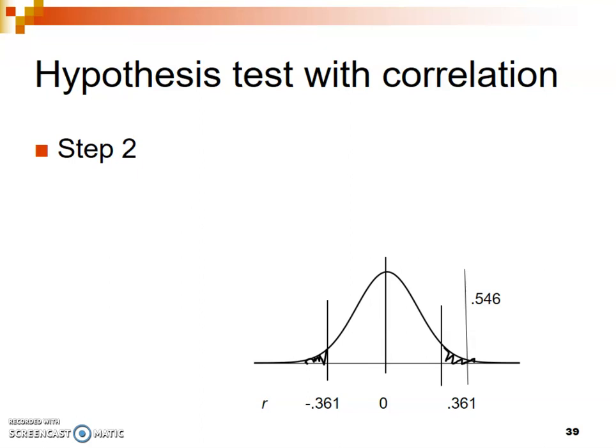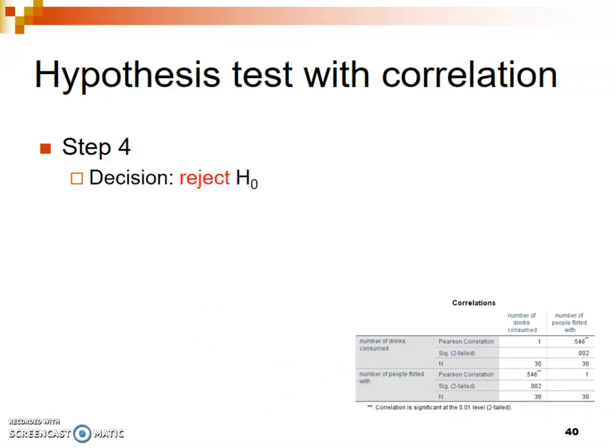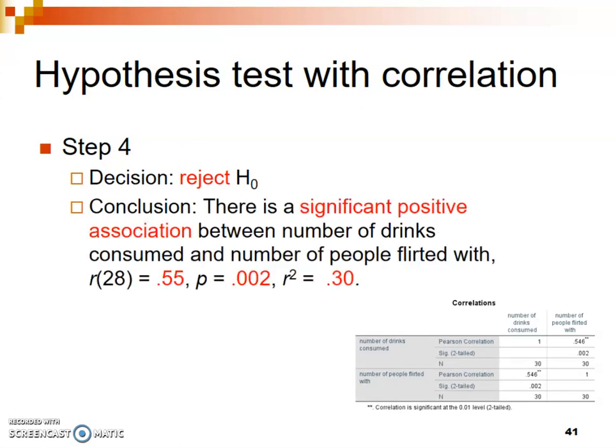Since our obtained value for R does fall in the critical region, our decision is to reject the null hypothesis. The null hypothesis was wrong — there actually is a correlation between these variables. The way we write up our conclusion is to state just that. We would say something like: there is a significant positive association. You could also say positive relationship, positive correlation, or positive association — use one of those three words to indicate it's a correlation.